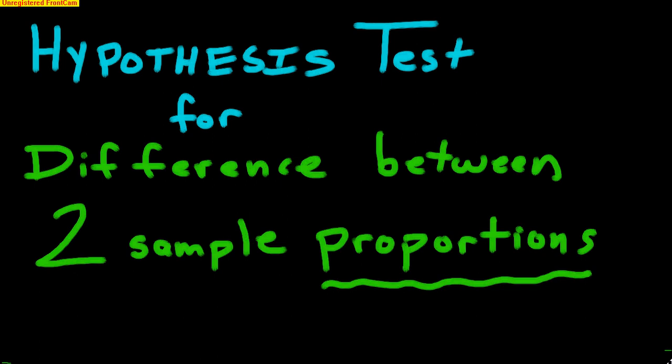This video is going to cover a hypothesis test for the difference between two sample proportions. We're talking about two completely separate proportions, not a matched pair — two completely separate proportions taken from two populations. We want to see: is there a difference between them? We have two sample proportions, and we want to know, is there really a difference between these two samples, or is it just natural variation?